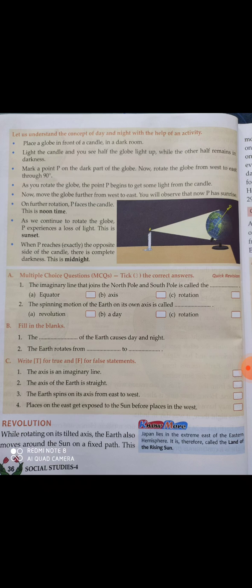As we continue to rotate the globe, P experiences a loss of light — this is sunset. We must keep rotating the globe, and gradually P will stop receiving light as it moves farther from the candle — the light disappears, meaning it is getting dark and sunset is happening. When P reaches exactly the opposite side of the candle, there is complete darkness — this is midnight. P gets no light at all, so now it is night.